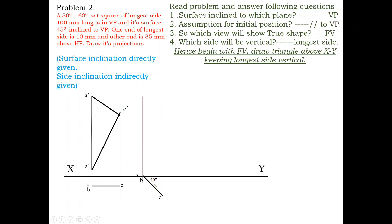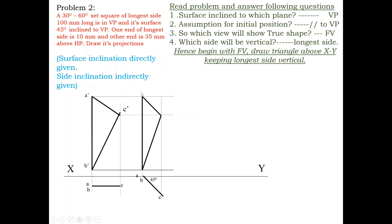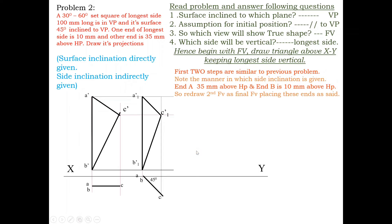We can see the triangle. The vertical line is A-B. Again, label C. The next angle is 45 degrees. One side is 10mm above HP and the other side is 35mm above HP.